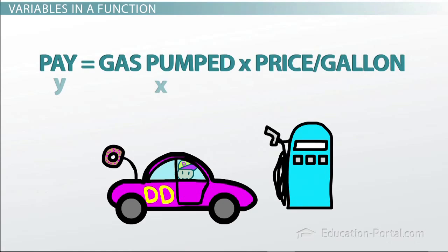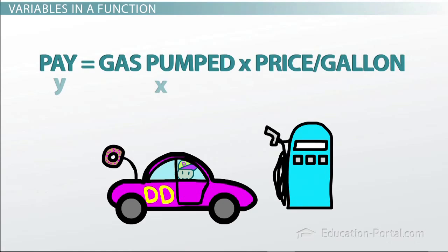So if gas is $4 a gallon, then we write y is equal to 4 times our input, which is the number of gallons we pump. If we pump, say, 4 gallons of gas, we plug this into our function, 4 times 4, and that's 16. So we would owe $16.